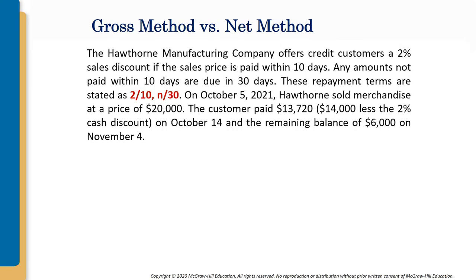Let's have an example. A manufacturing company offers credit customers a 2% sales discount if the sales price is paid within 10 days. Any amounts not paid within 10 days are due in 30 days — repayment terms stated as 2/10/30. On October 5, 2021, Hawthorne sold merchandise at a price of $20,000. The customer paid $13,720 on October 15, meaning within 10 days, and the remaining balance of $6,000 on November 4.